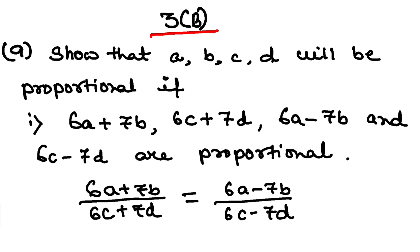Basically this is given to you and you have to prove that a, b, c, d will be proportional, that is a by b equal to c by d. Alright. So now let us go to the proof.